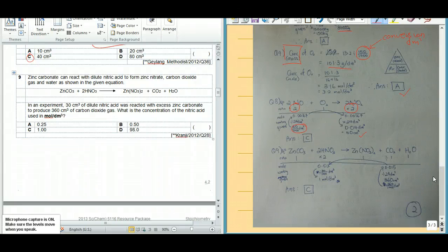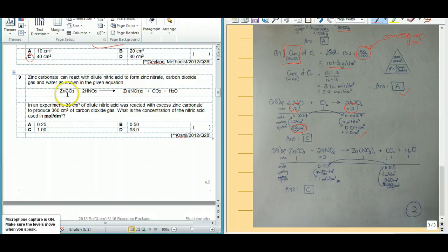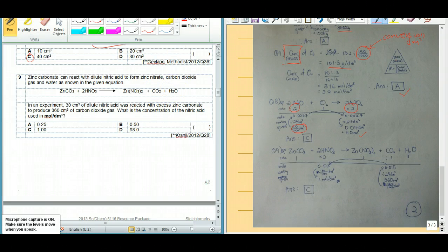Chemical calculation, MCQ, question 9. So in question 9, you can see from the equation, we know that zinc carbonate reacts with nitric acid to give you zinc nitrate, carbon dioxide and water.